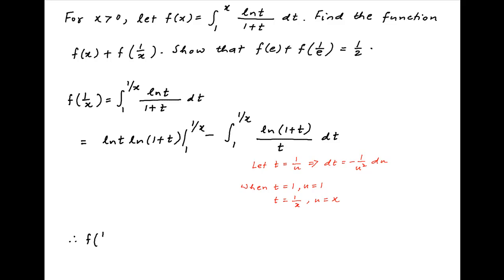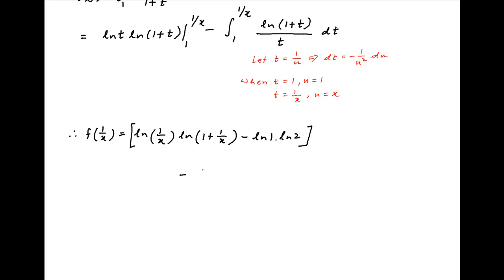Therefore, f(1/x) equals, putting in the limits for the first term, we get ln(1/x) times ln(1 + 1/x), minus ln(1) times ln(2), minus the integral with substitution giving ln(1 + 1/x) times ln(1 + 1/u) times (−1/u²) du.